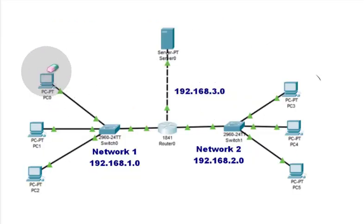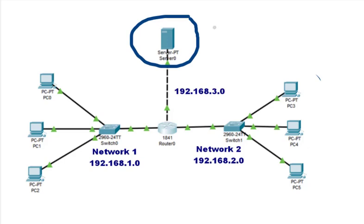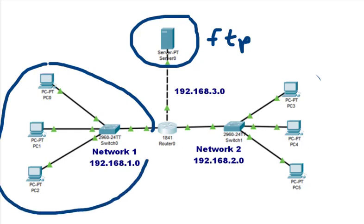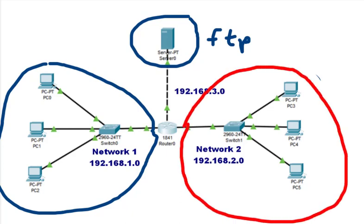What we will be doing is applying ACLs such that the server, which provides many services, is controlled through FTP service access. Before applying the ACLs, we will check that all PCs from network 1 and network 2 can get the FTP service. After applying ACLs, network 1 will be allowed the FTP service while network 2 will be denied the FTP service.